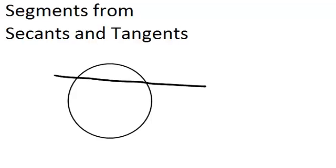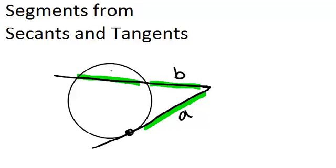So if we start out by drawing a circle, and in that circle drawing a secant line which intersects the circle twice, and also a tangent line which intersects the circle once, we've created three different segments: 1, 2, and 3. And we're going to call those segments A, B, and C.